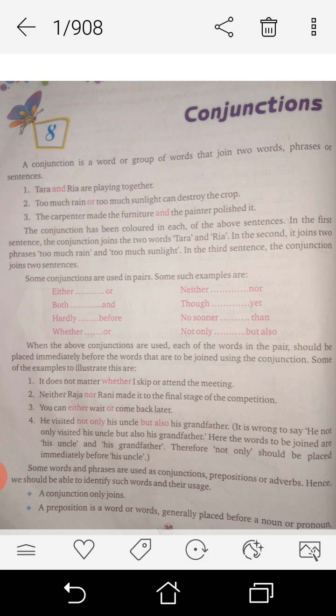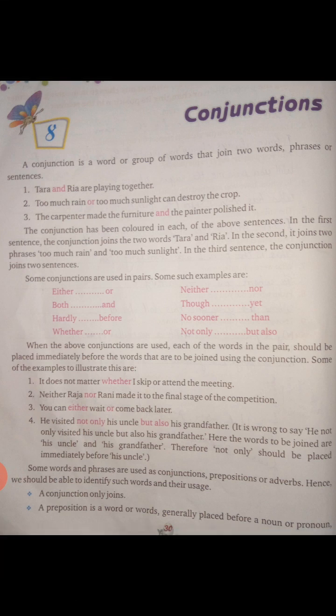A conjunction is a word or group of words that joins 2 words, phrases, or sentences. What do you mean by conjunction? A conjunction is a word or group of words that joins 2 words.